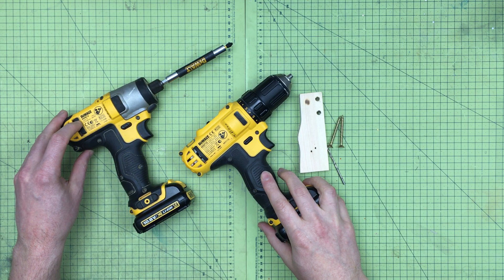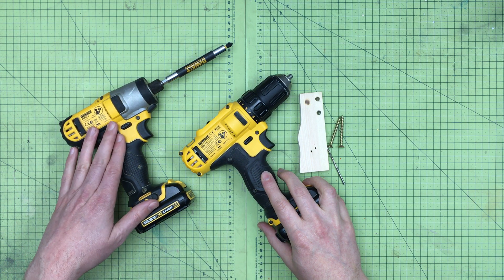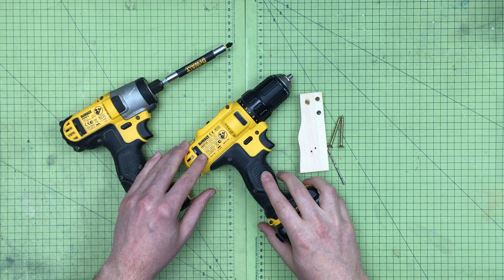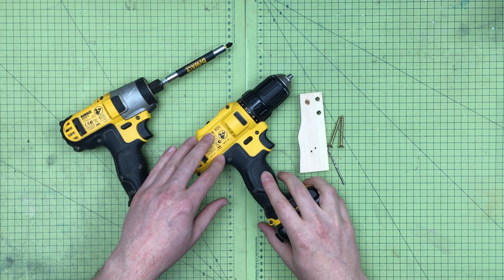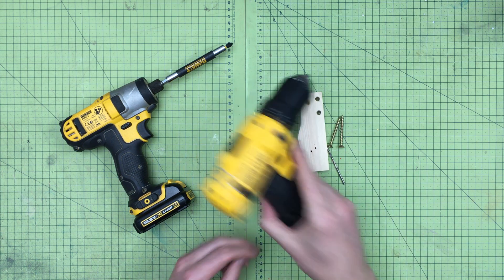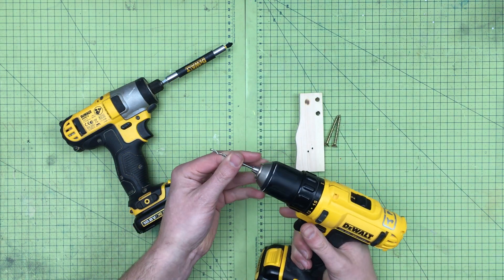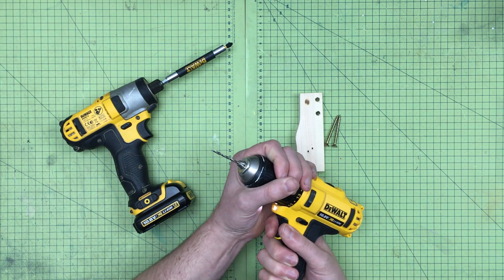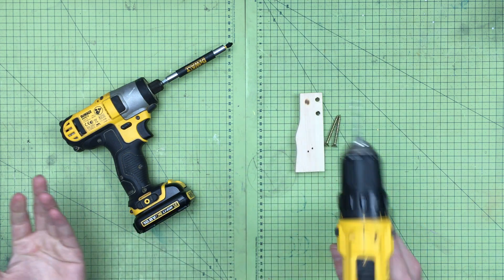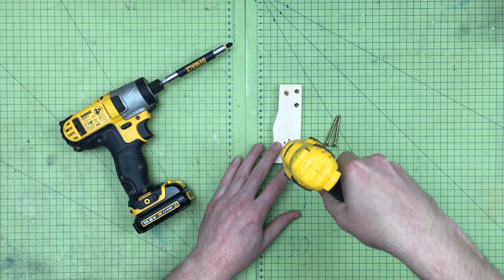But essentially, the reason why you often see these sold as a pack—this is a DCF815 impact driver and a DCD710 screwdriver—is that the benefit is if you're wanting to not just drill holes but also pilot holes. The benefit of this thing is that you can of course drill the hole and then straightaway afterwards.